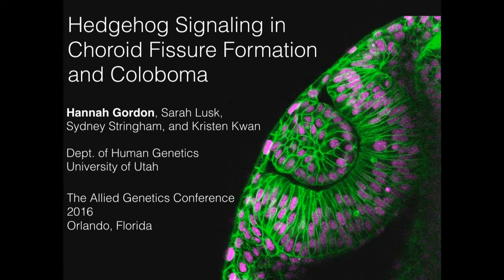Hannah Golden from the University of Utah. Hi, good morning. I would like to first thank the conference organizers for the opportunity to speak today. I'm Hannah, a postdoc in the Quan lab at the University of Utah where we study optic morphogenesis using zebrafish as our model. Today I'll be telling you about how hedgehog signaling regulates choroid fissure development and its role in a human developmental eye defect called coloboma.